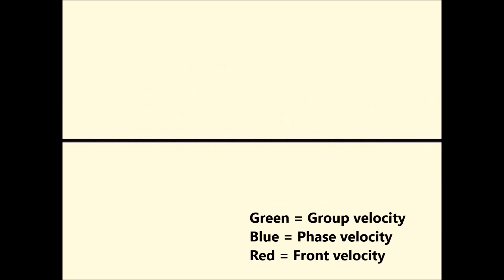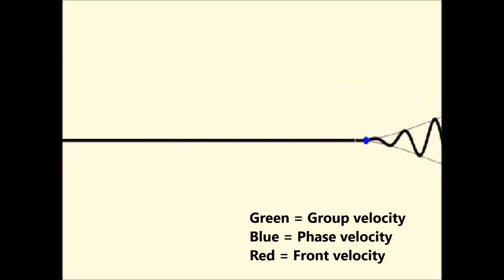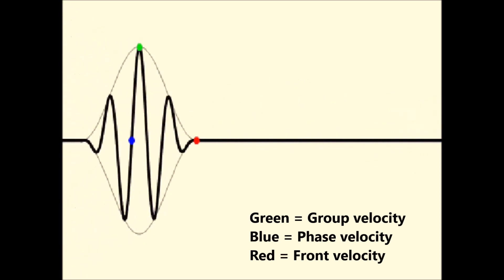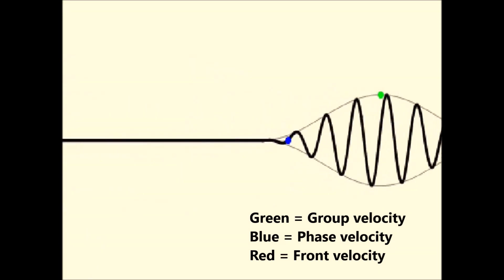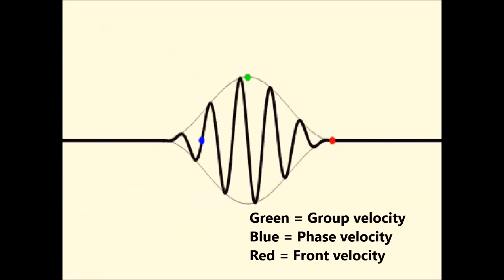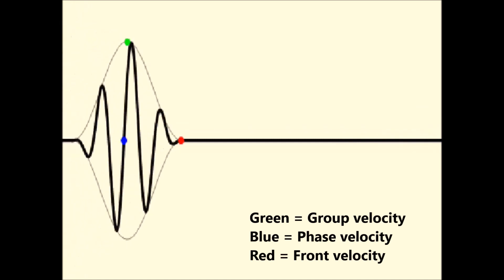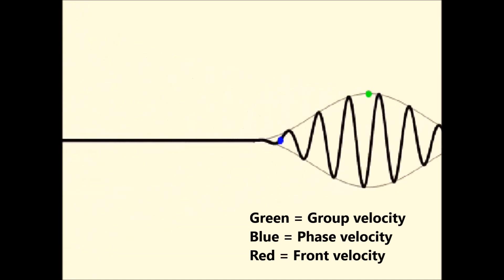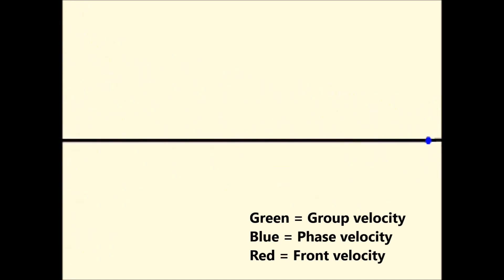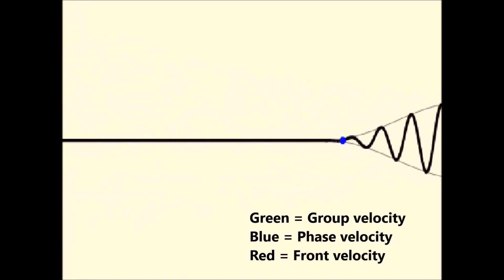The thing that corresponds to the transmission of a signal is the third type of velocity, the front velocity. This is the train's velocity in our analogy, and it's this velocity that never, ever deviates from the speed of light. The front velocity is what's referred to when physicists talk about the speed of light. It's this velocity that corresponds to the transfer of energy and information. This is the velocity that we speak of when we talk about the propagation of light from A to B.